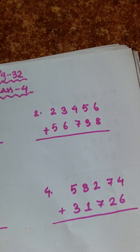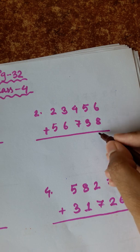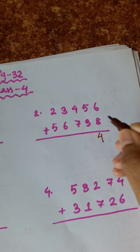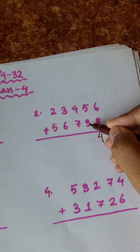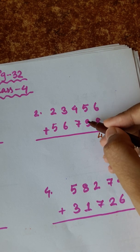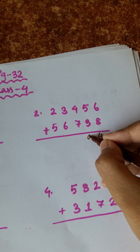8 plus 6 is 9, 10, 11, 12, 13, 14. 3 plus 1 is 4. 5 plus 4 is 9.